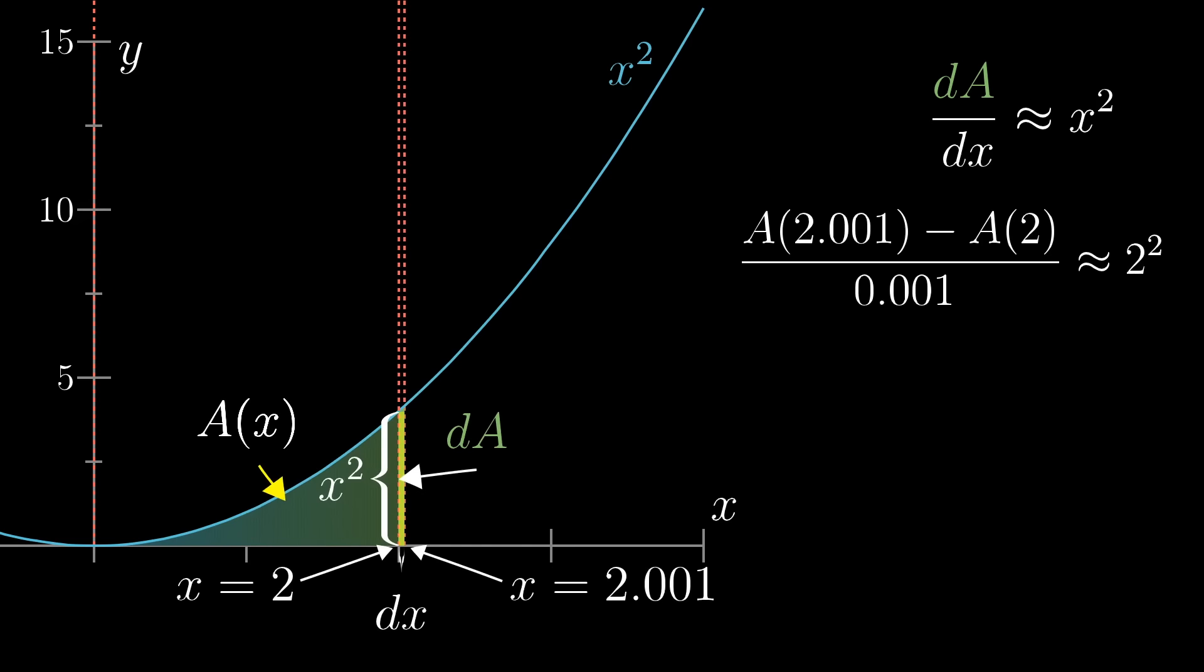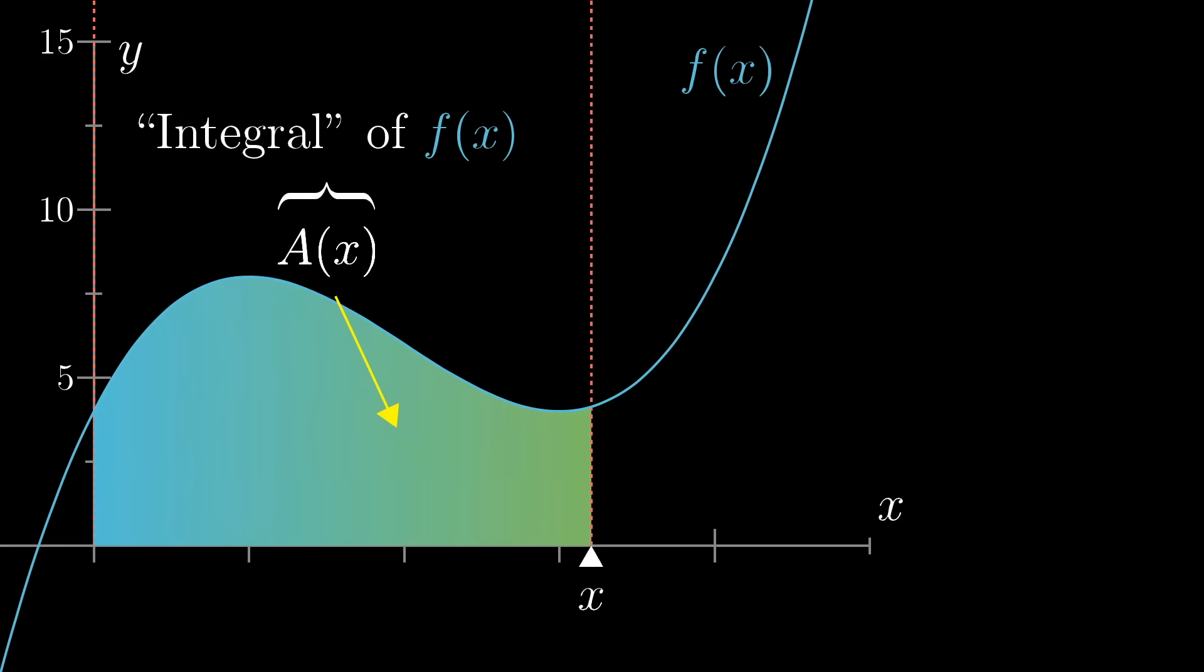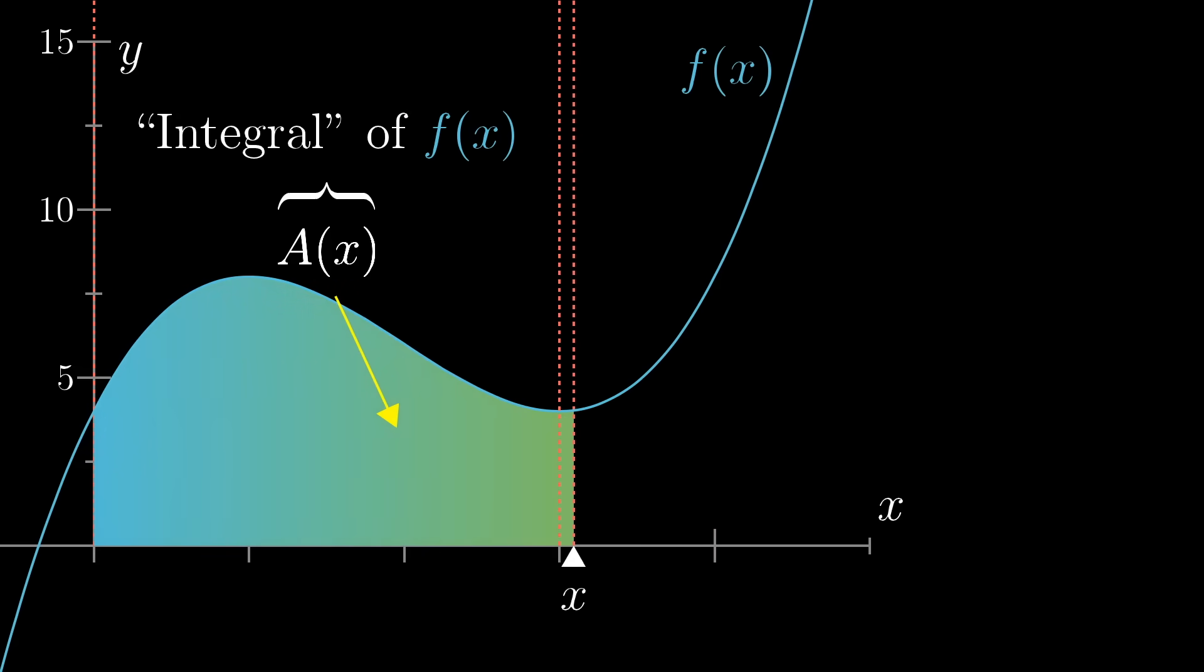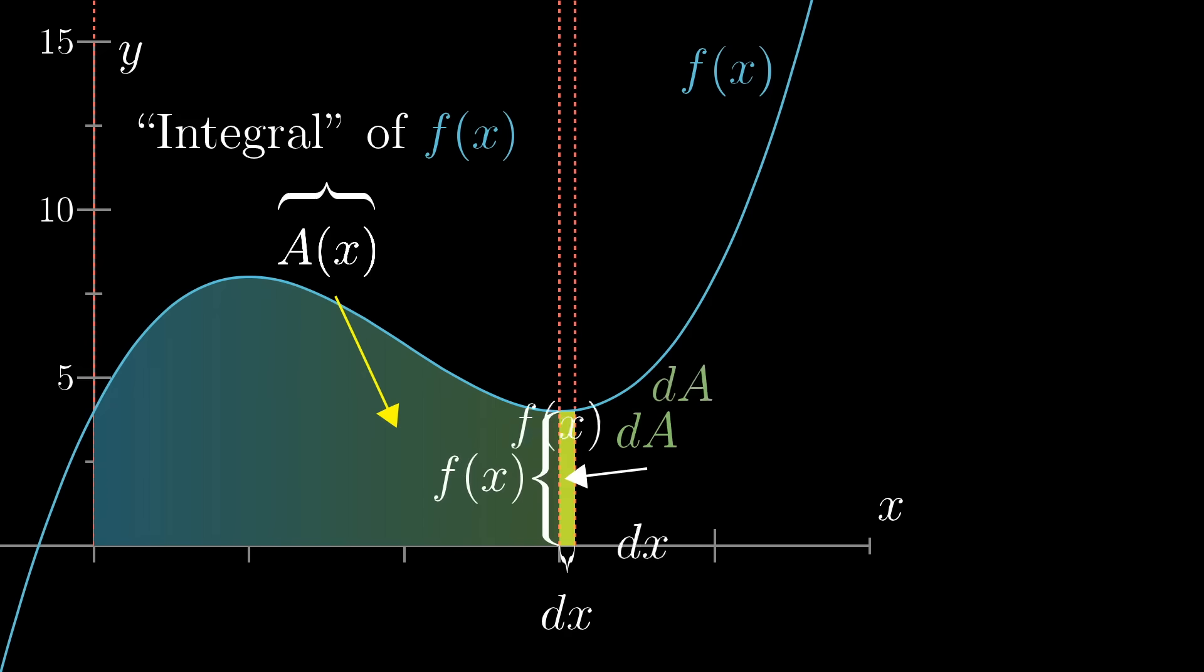That doesn't immediately tell us how to find A, but it provides a very strong clue that we can work with. And there's nothing special about the graph x squared here. Any function defined as the area under some graph has this property, that dA divided by dx, a slight nudge to the output of A divided by a slight nudge to the input that caused it, is about equal to the height of the graph at that point.